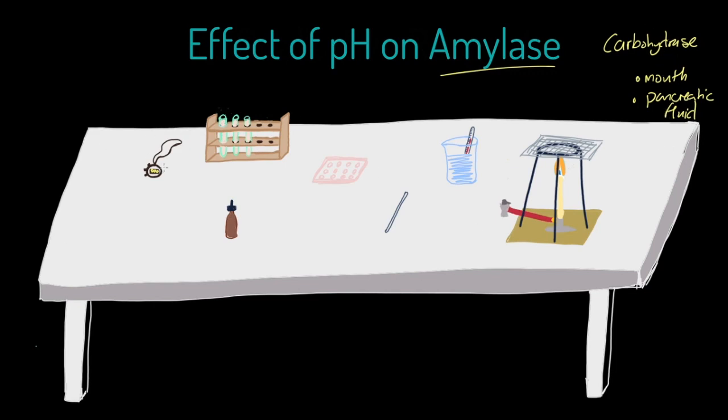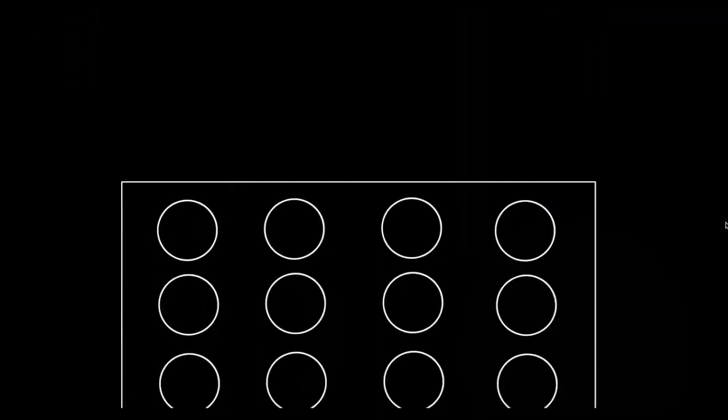Equipment we've got available includes a stopwatch, test tubes in a rack, iodine, a spotting tray or spotting tile, a stirring rod, a beaker which we're going to use as a water bath with a thermometer in it, and we have the capacity to warm things up with our Bunsen. That's the equipment we have. Let's get started in this process.